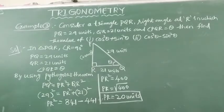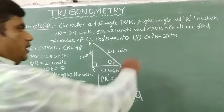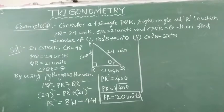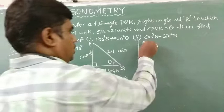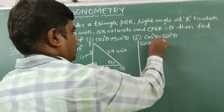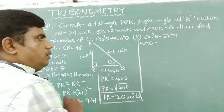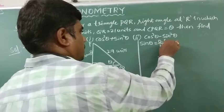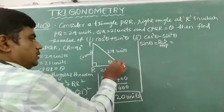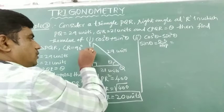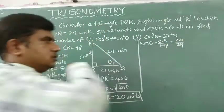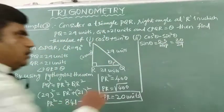Now we know all 3 sides of the right angle triangle, so we can find any trigonometric ratio values. We want only sin theta and cos theta. Sin theta means the ratio between the opposite side to the hypotenuse. The opposite side is 20 and the hypotenuse is 29, so sin theta value is 20 by 29.